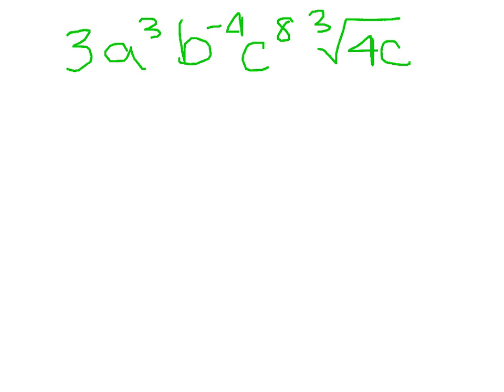Then we are going to combine and multiply across our like terms. So we get 3a to the 3rd, b to the negative 4th, c to the 8th times cube root of 4c. Then we want to use a negative exponent rule to further simplify our problem.